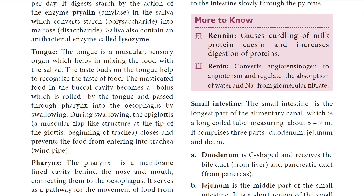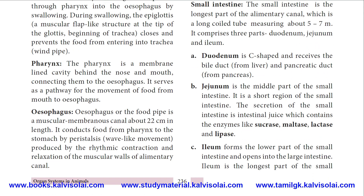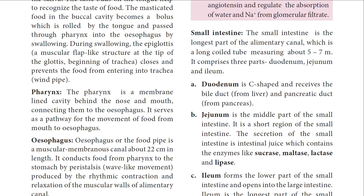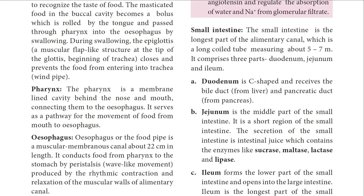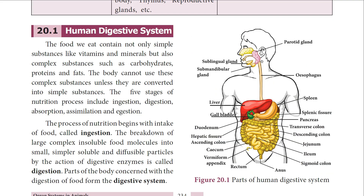The pharynx is the next region of our food passage — a membrane-lined cavity that lies behind the nose and mouth, connecting them to the esophagus. The esophagus, otherwise called the food pipe, is a muscular membranous canal about 22 centimeters in length. It connects the stomach with our buccal cavity.